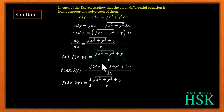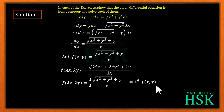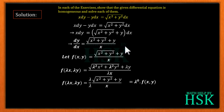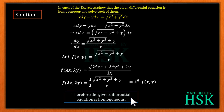From inside the square root we take λ² common, which gives us λ. So λ cancels from numerator and denominator, and we can write f(λx, λy) = λ⁰ × f(x, y). This shows that f(x, y) is a homogeneous function of degree 0, and because dy/dx equals a homogeneous function of degree 0, the given equation is homogeneous.